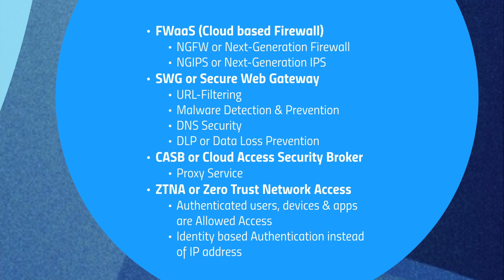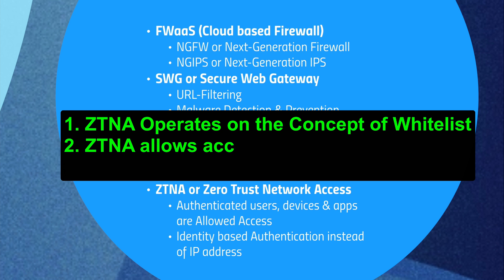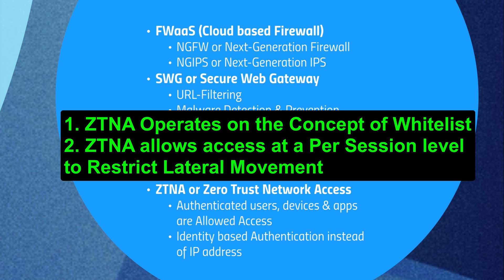The final security component is ZTNA, or Zero Trust Network Access. The idea is there is no trust unless users have been authenticated — they do not get access to anything. Whether it's users, devices, or apps, they must be provided explicit access ahead of time, and they must be authenticated in real time. The whole idea is that access is based on the identity of the user rather than the IP address. Instead of programming ACLs around IP addressing, it's now identity-based — using things like Active Directory or, for Cisco shops, ISE, the Identity Services Engine.